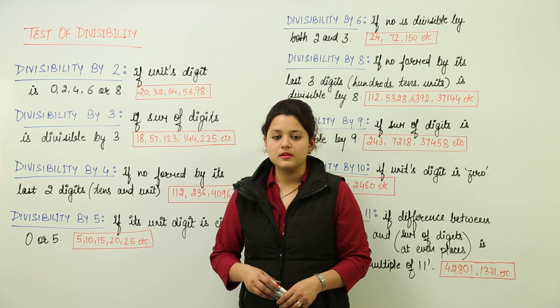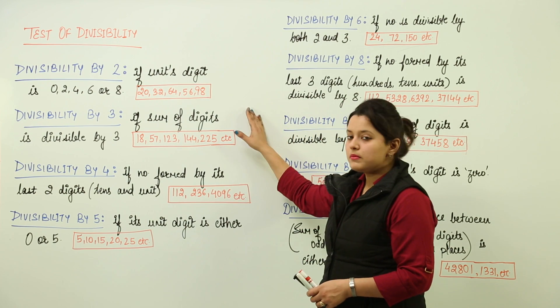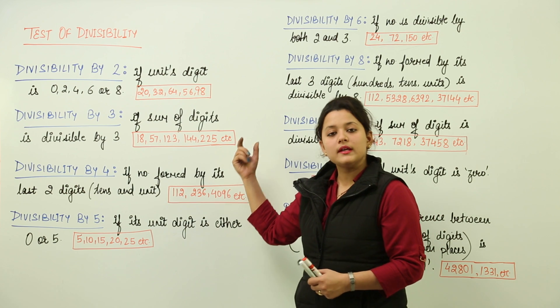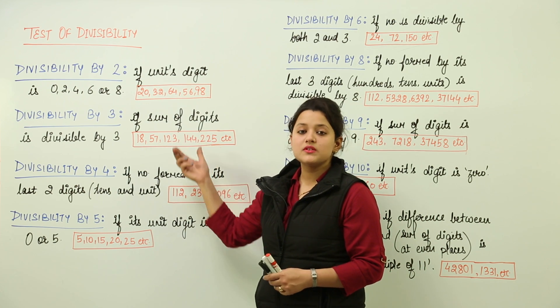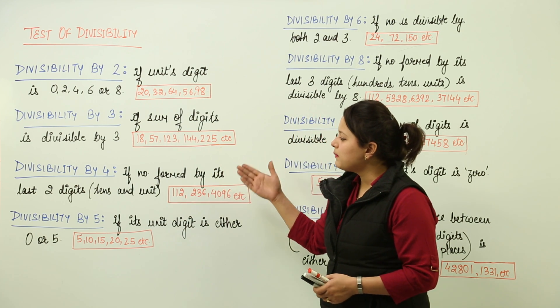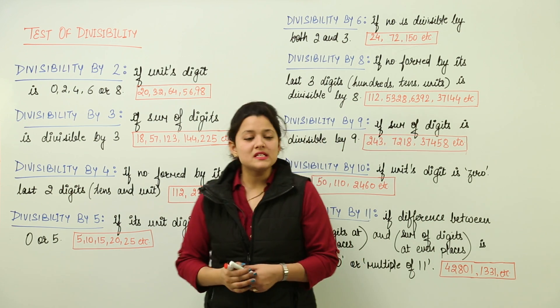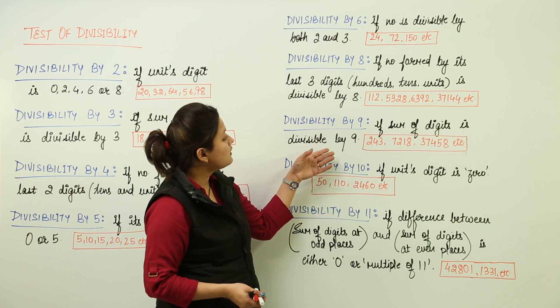Test of divisibility. Now we have different numbers. We can test the number directly whether the given number is divisible by 2, 3, 4, 5, 6, 8, 9, 10.